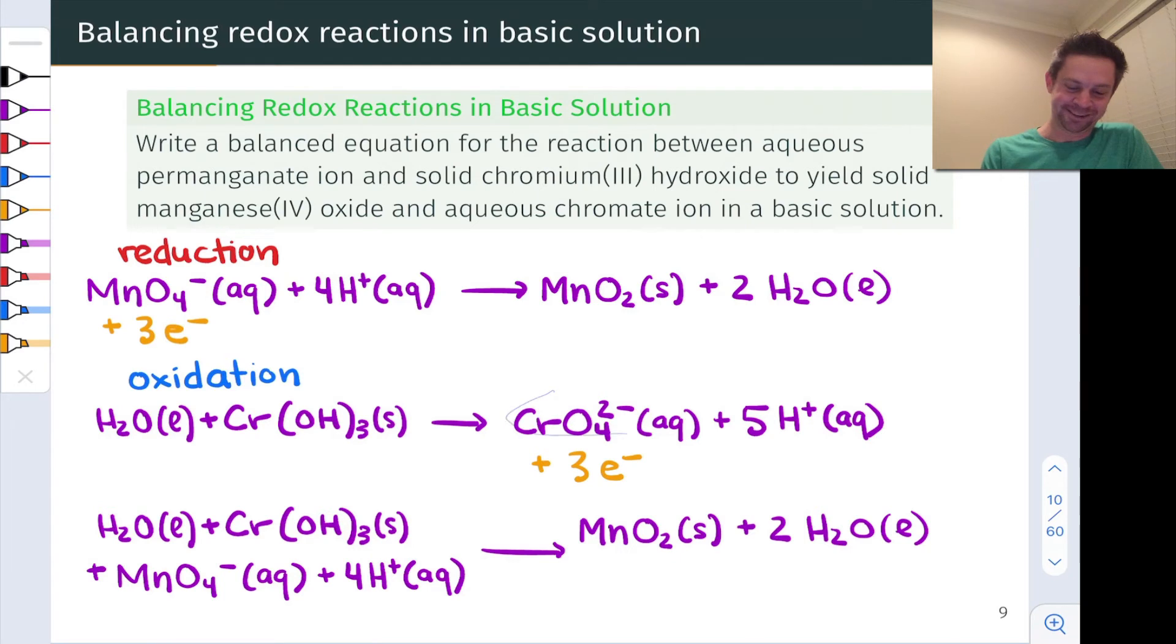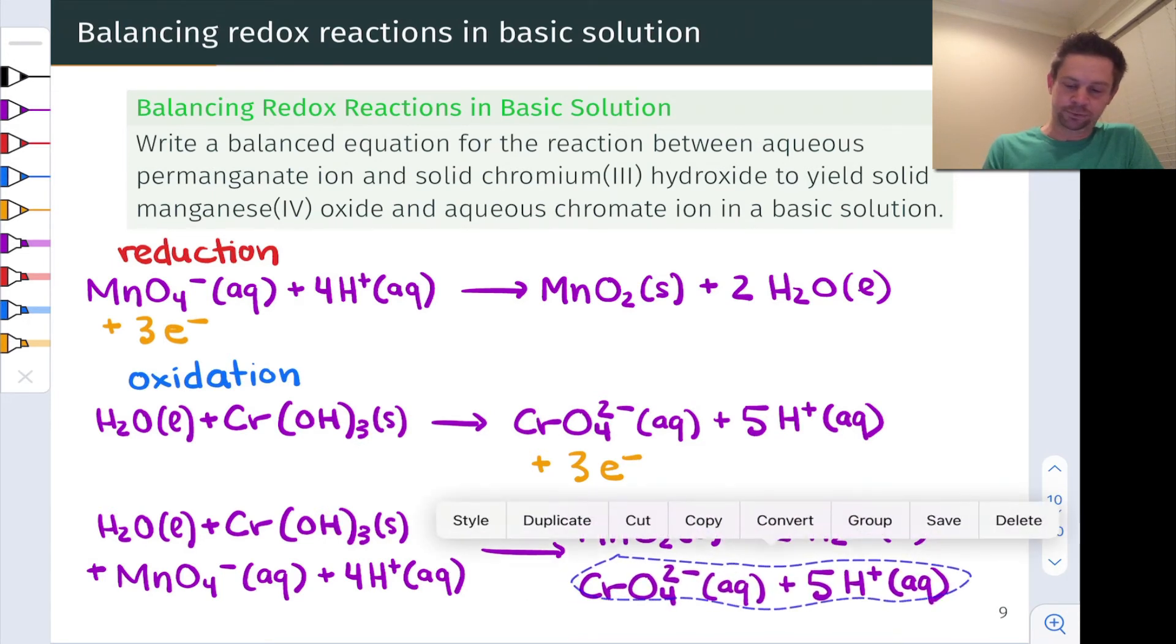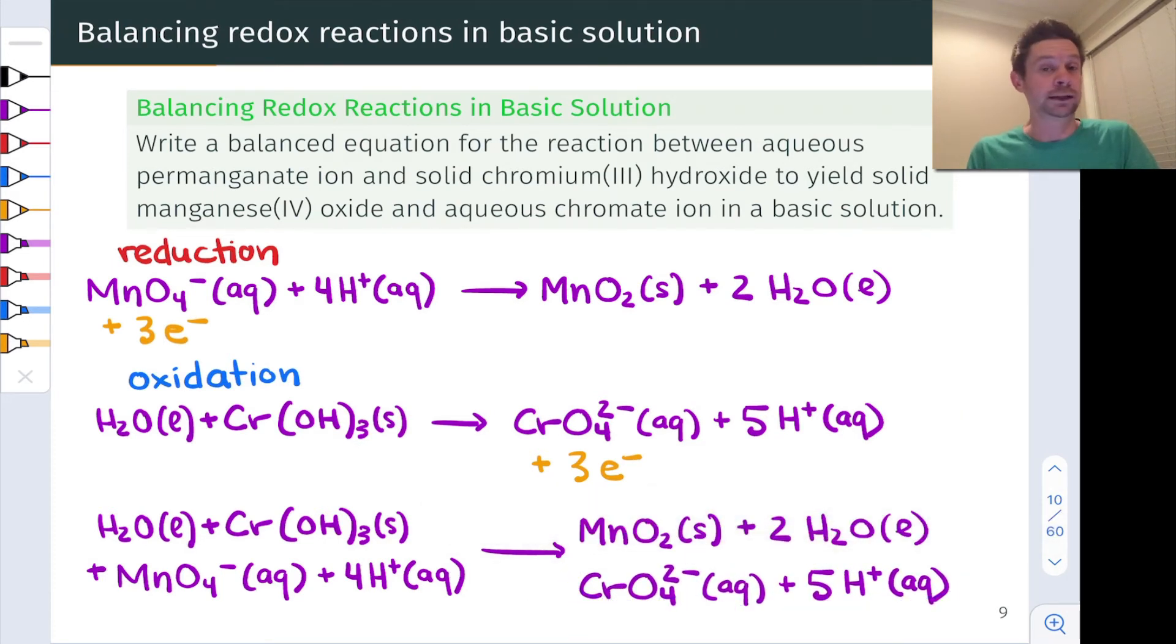And we're going to add the products of the chromium half reaction. And notice I've left out the electrons since I know these will subtract out. Ultimately, they're already balanced. We had to make sure they were balanced in a previous step on both the reactant and product sides, so I'm not even going to copy them down.